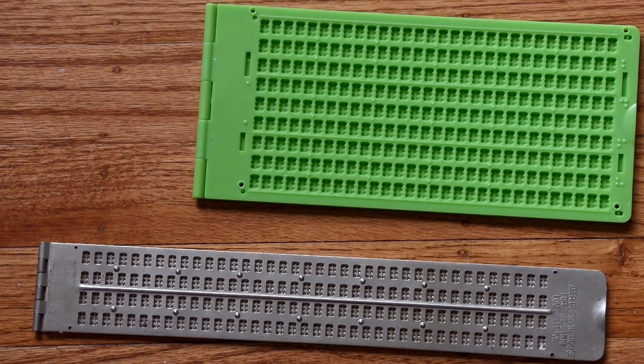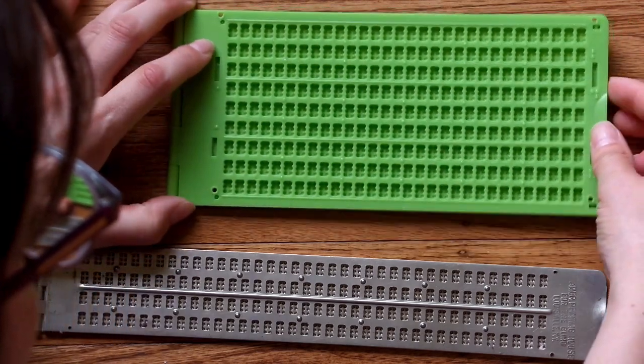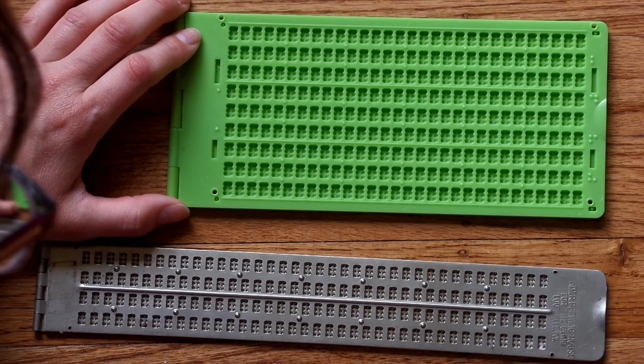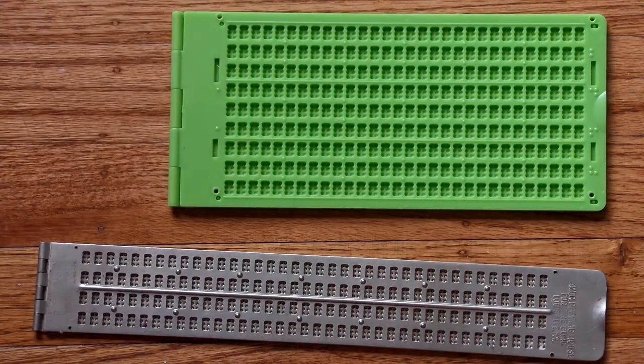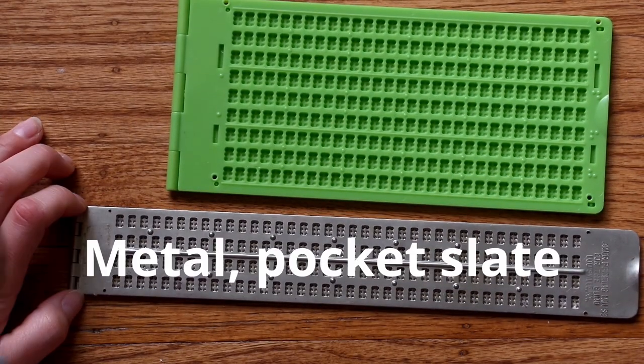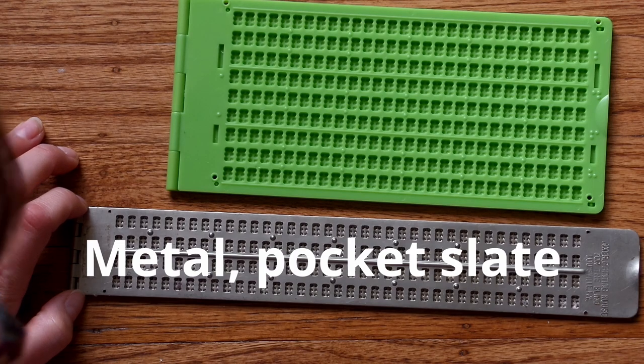So slates, when you're looking for them online, they're described by how many lines and how many cells they have. So in the case of this green plastic slate it is nine lines long and 30 cells wide. And this is kind of based off of preference so I recommend you buy several different ones and see what you like. And this metal pocket slate it is four lines long by 38 cells.